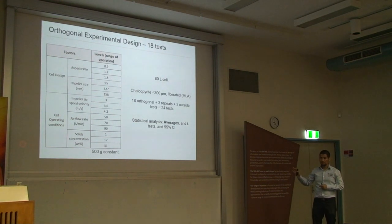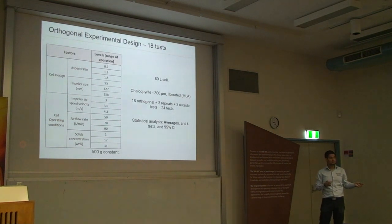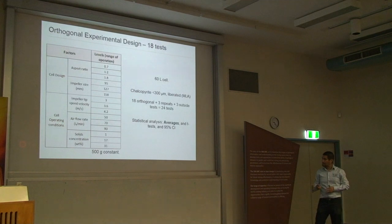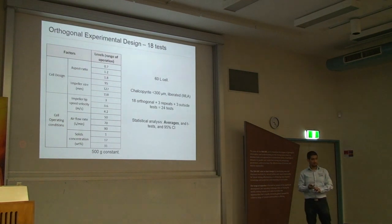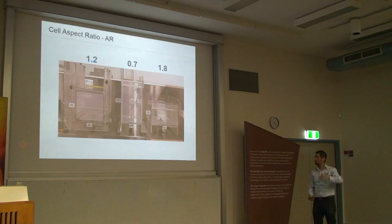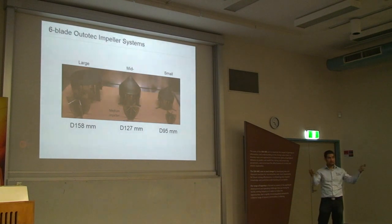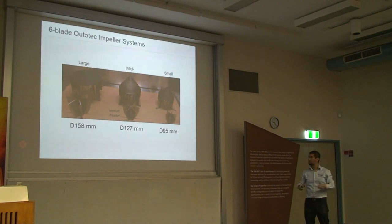The three flotation cells are square, tall, and wide. The impellers are all identical — a six-blade impeller — and there is a cone to avoid settling of particles on top of the stator and to enhance circulation of flows in the cell.